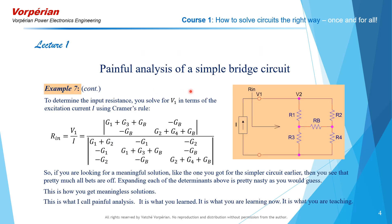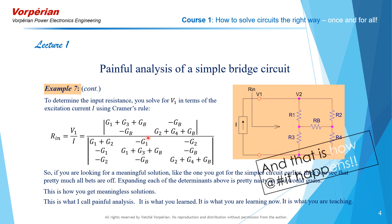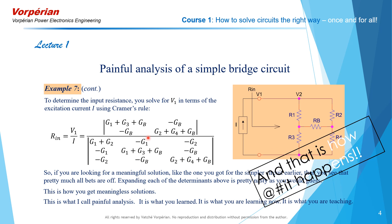In the last example of my previous video, I showed you that when you use nodal analysis to determine the input resistance of this bridge circuit, you obtain this answer here — the ratio of two determinants. When you go through the tedious algebra of expanding these determinants, you get a gigantic, meaningless answer. And as I said, that is how stuff happens.